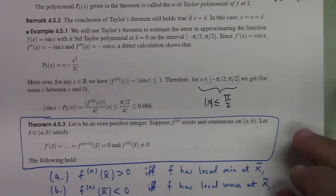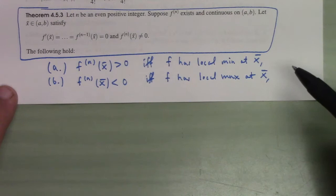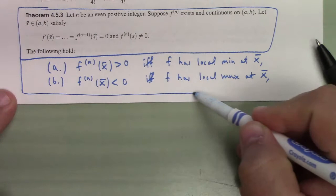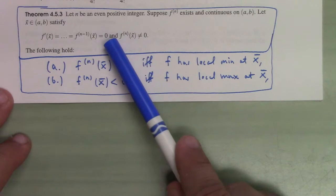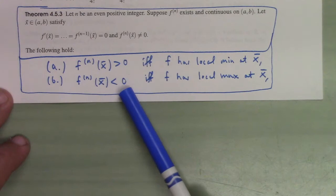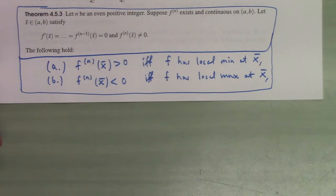The last theorem is the extended derivative test — a souped-up version of the second derivative test from calculus 1. If you have a critical point where the first through (n-1)th derivatives are all zero but the nth derivative is non-zero, then: if the nth derivative is positive it's a local min; if negative, it's a local max. This continues to be true for higher n, and that's kind of neat.